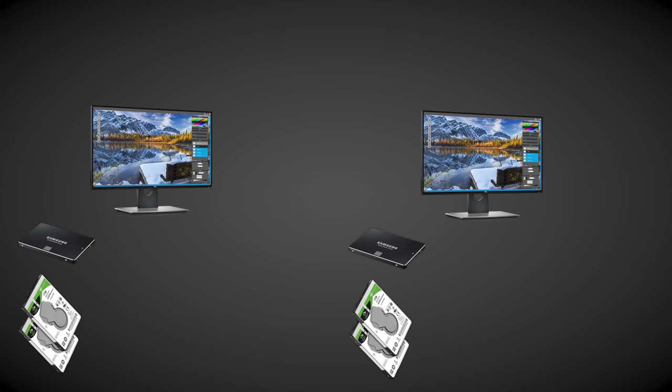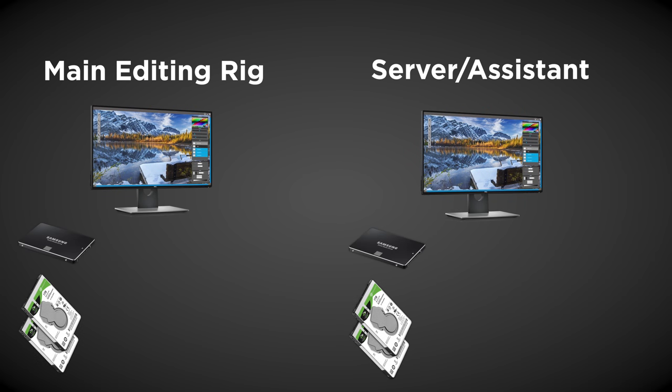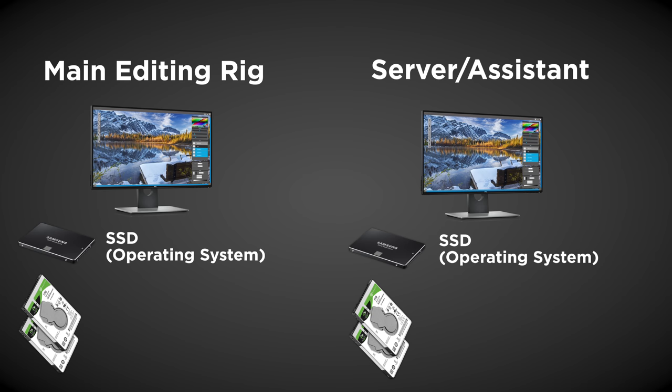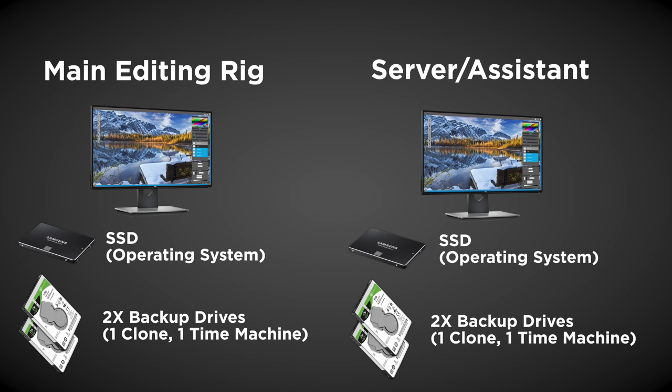That's category one and two — current work and archived work. For our computer setups, I have two machines in the studio: one is my main editing machine, and the second runs the server but can also be another edit bay. For those, I have internal SSDs to run the OS, and inside each computer I have two additional hard drives. One is dedicated to Time Machine — Apple's built-in backup system — and the other uses Carbon Copy Cloner to back everything up once a day or every other day. This way, if my main hard drive completely fails, I have a cloned backup that is bit-for-bit exactly the same as my OS system, plus the Time Machine setup.